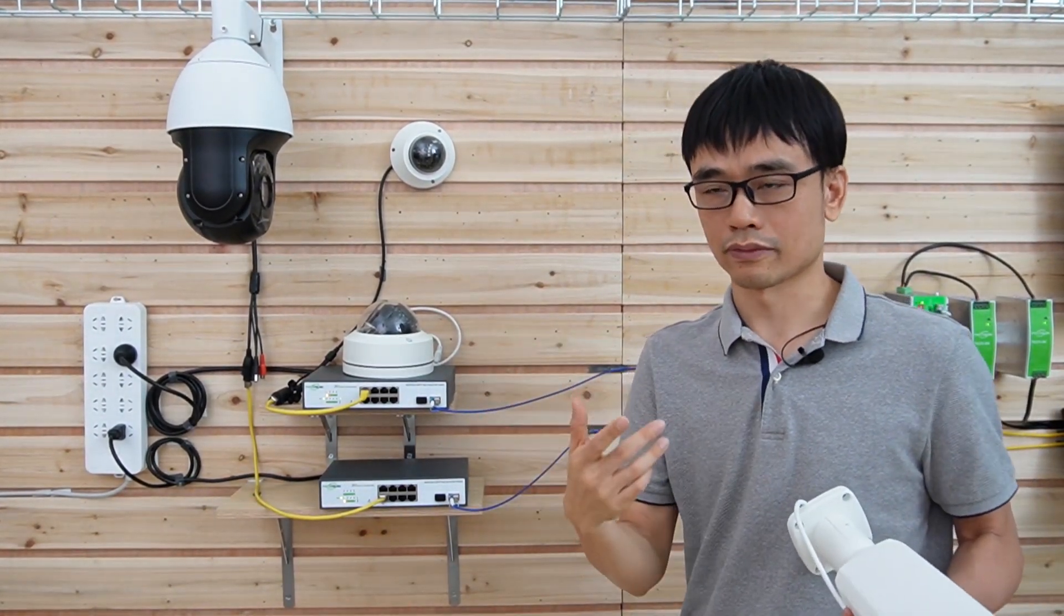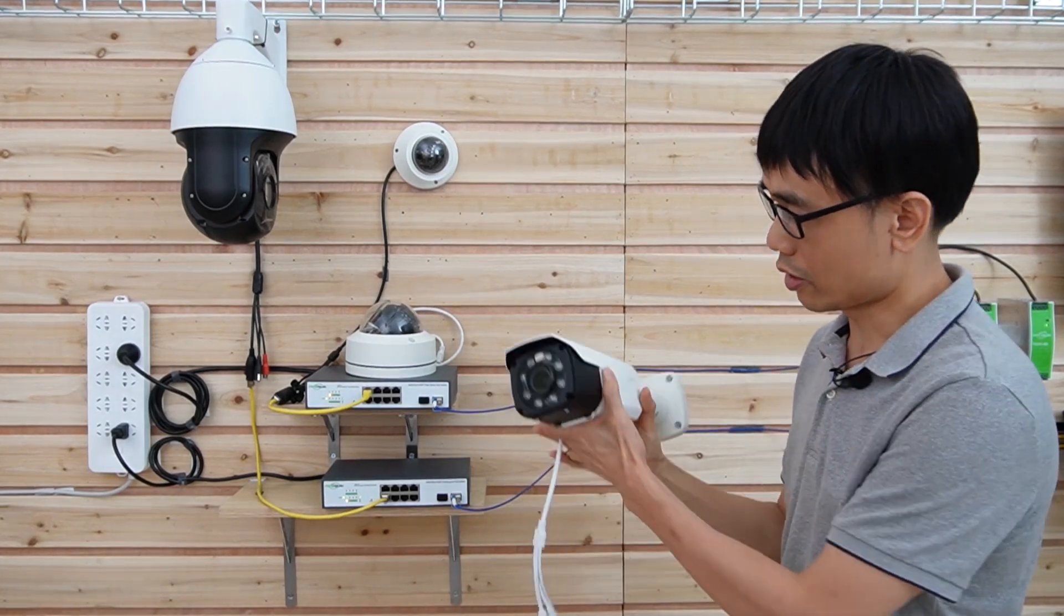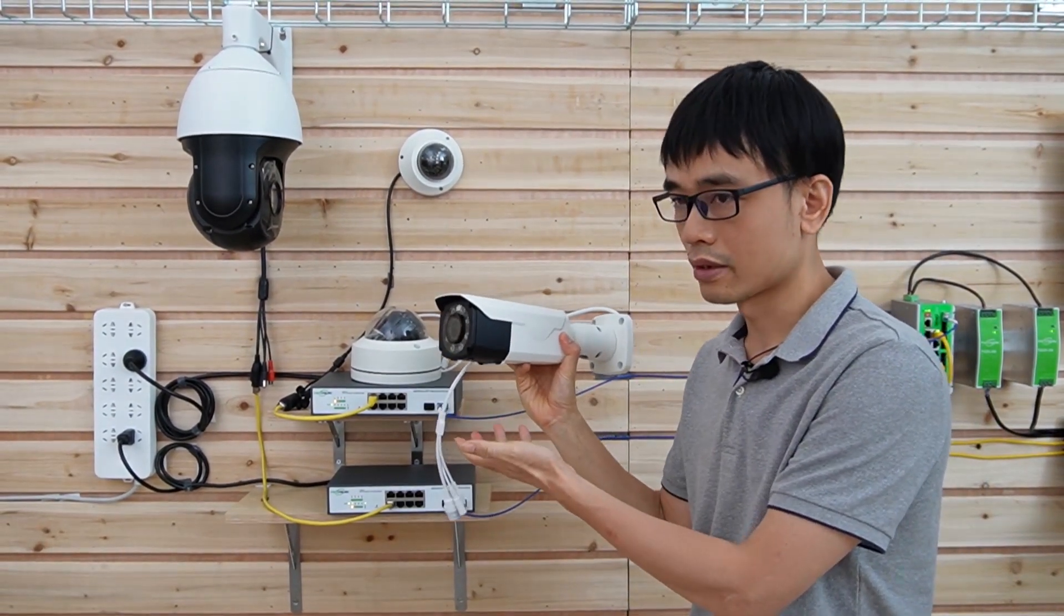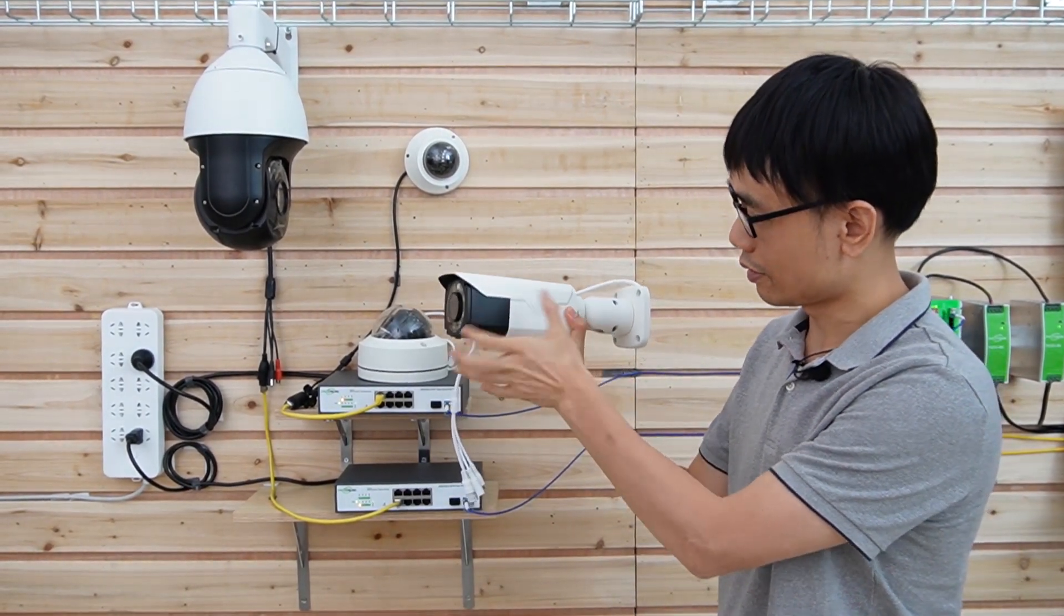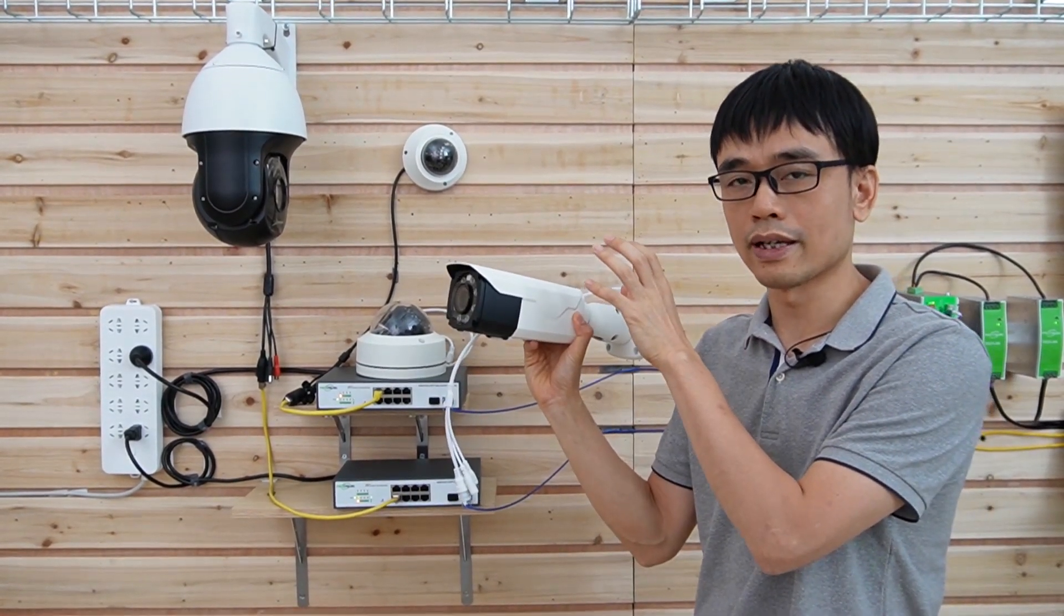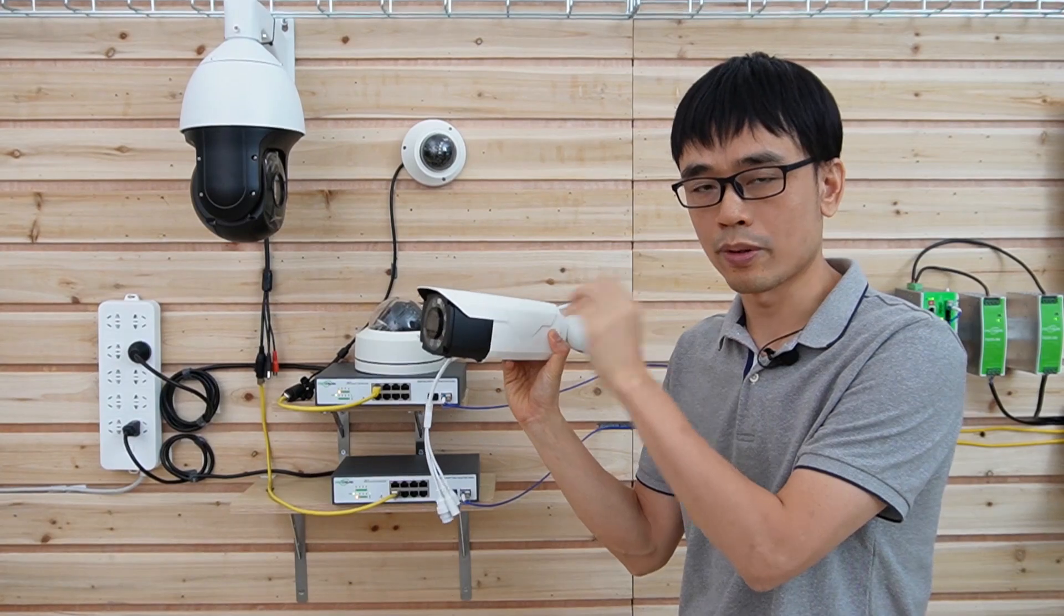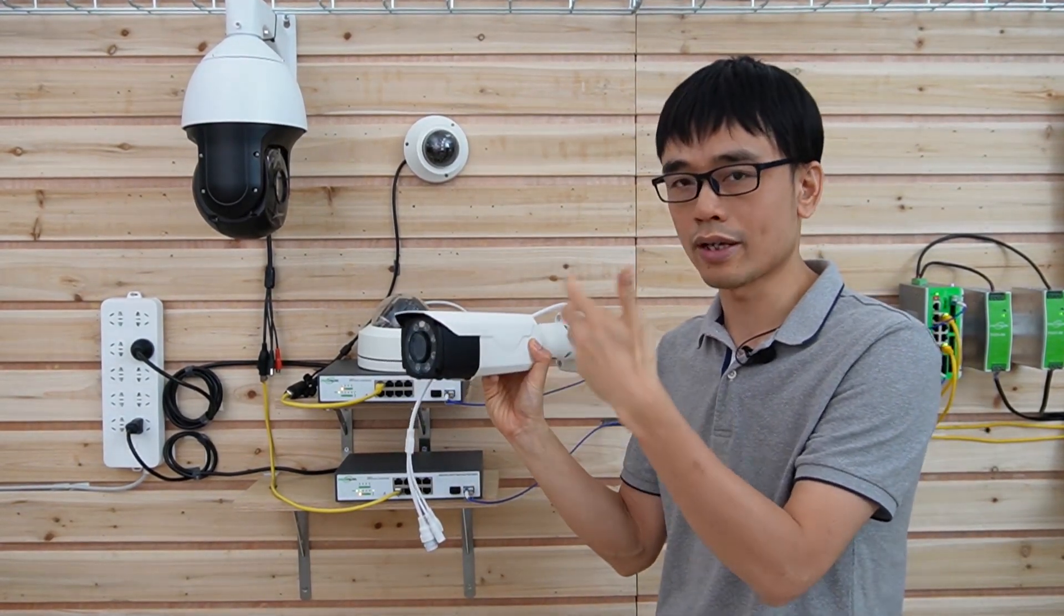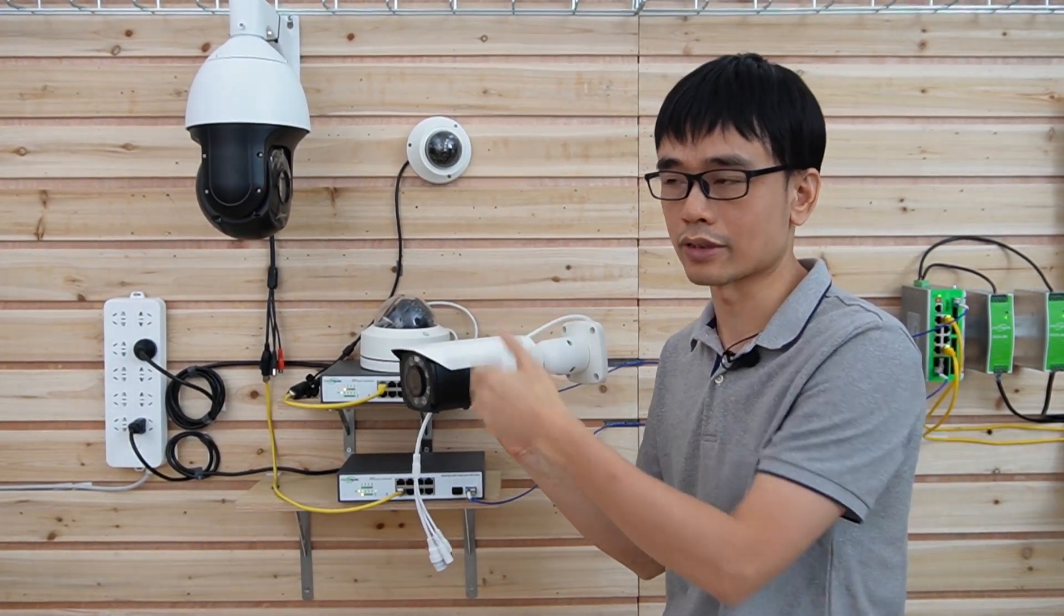And how about outside of the building? Outside of the building, I would recommend using this bullet camera. The reason is it's stronger. Actually, it will become intimidating for criminals. They will see that's the camera. It's okay to place this camera outside.